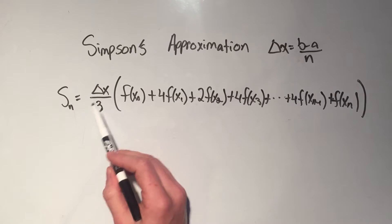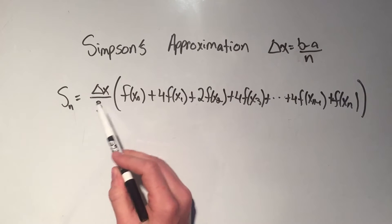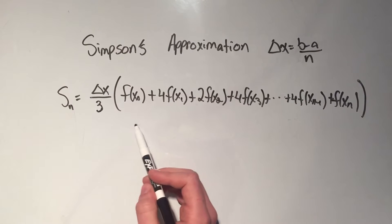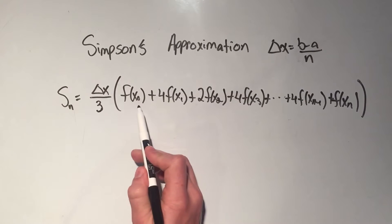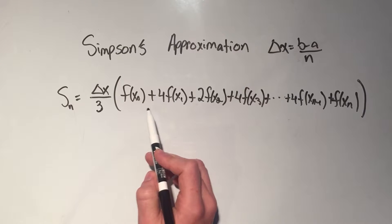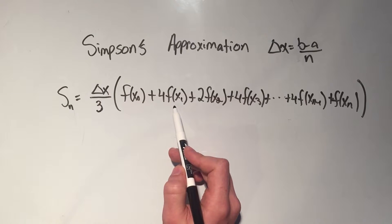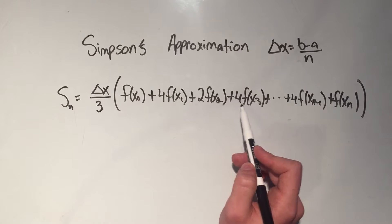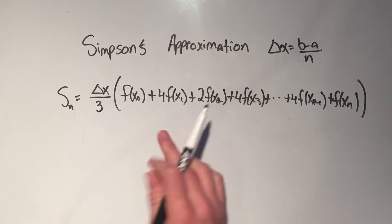So the trapezoid rule was delta x over 2, Simpson's rule is delta x over 3, and it's times this summation, this sum, and it's f of x0, so just like the trapezoid rule, there's a 1 in front of this one, and then it's plus 4 f of x1 plus 2 f of x2 plus 4 f of x3, and this alternates.